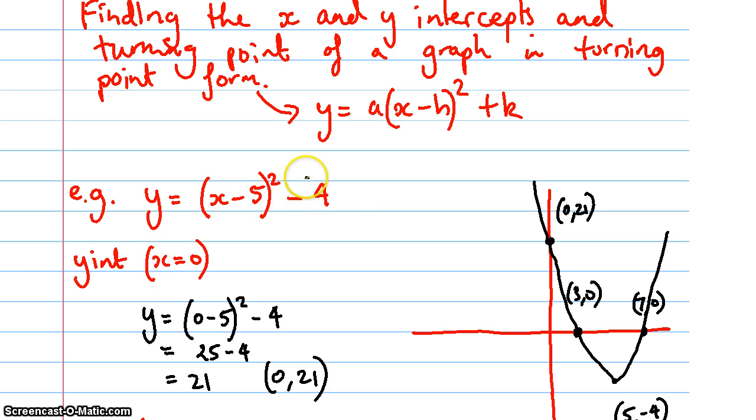Now it's not negative four. The y-intercept will not be negative four. You actually need to substitute x equals zero in and solve what it is. Whereas in the other form with the intercept method, it was just this number at the back. It's not the case for this one here.